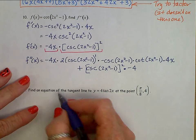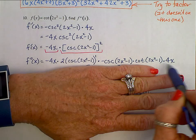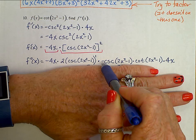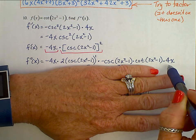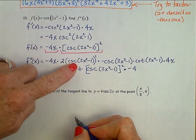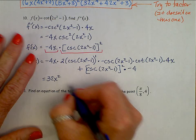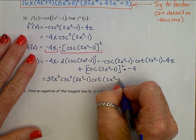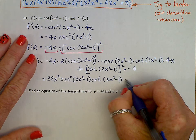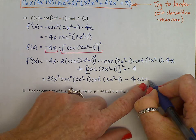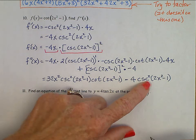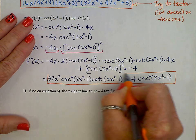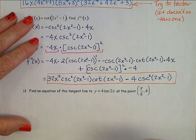Let's clean this up. In the top line: negative 4X times 2 is negative 8X, times negative 1 is positive 8X, times 4X is 32X squared. For the cosecants, we have two of them, so cosecant squared of (2X squared minus 1) times cotangent of (2X squared minus 1). That's the first piece. The second piece is minus 4 cosecant squared of (2X squared minus 1). You could try to factor this further, but nothing factors, so we stop right there.